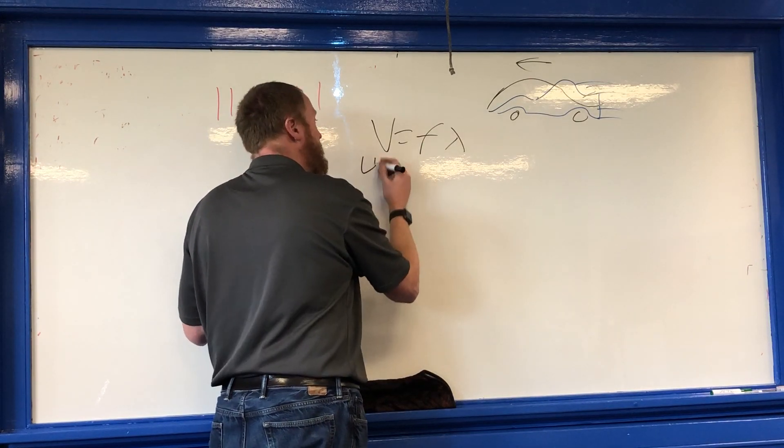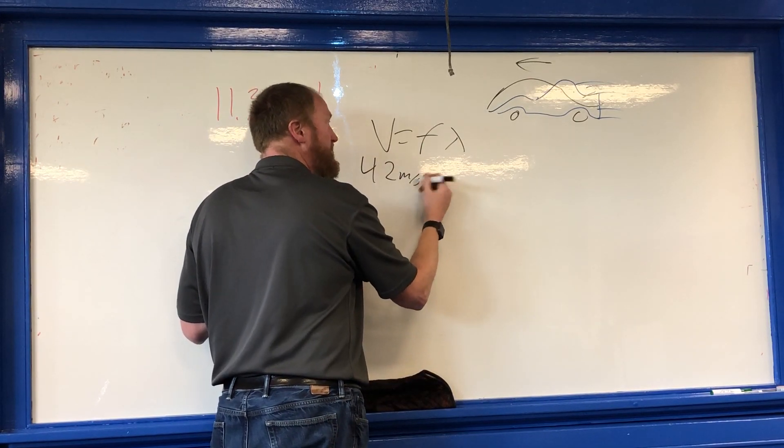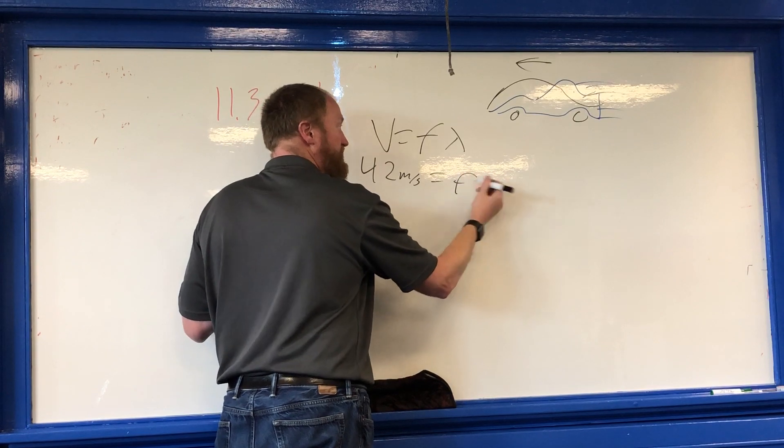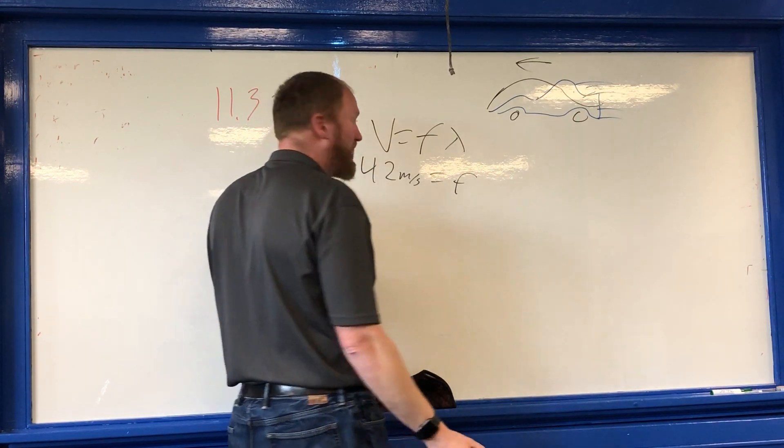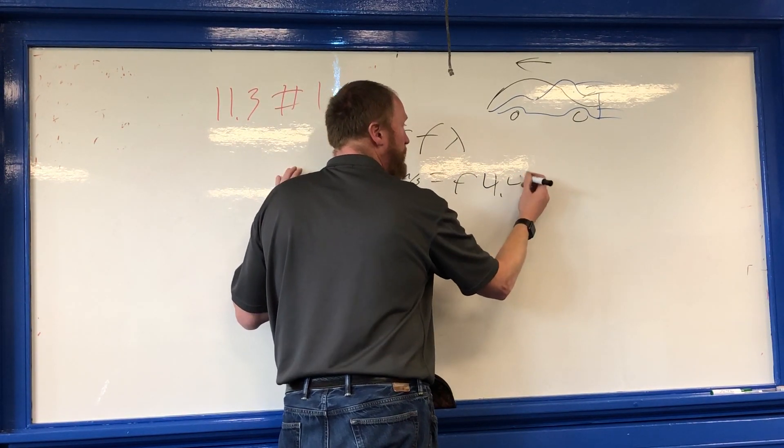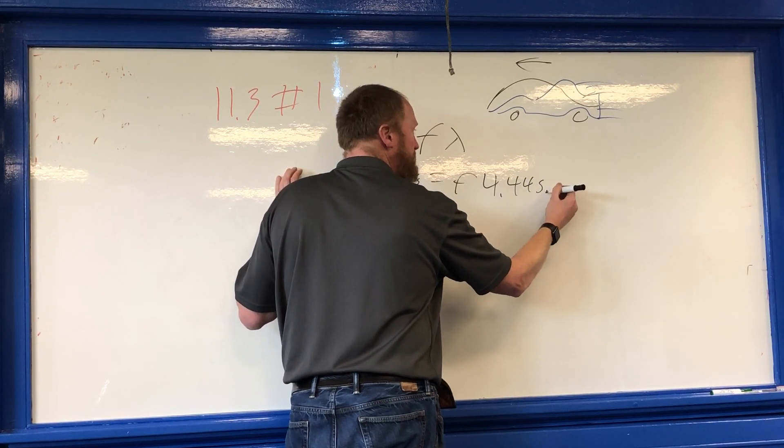Now my car's max velocity is 42 meters per second. Frequency times the wavelength, the length of my car, is 4.445 meters.